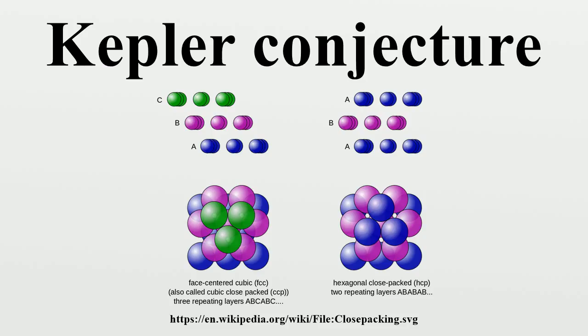However, a higher density can be achieved by carefully arranging the spheres as follows. Start with a layer of spheres in a hexagonal lattice, then put the next layer of spheres in the lowest points you can find above the first layer, and so on.